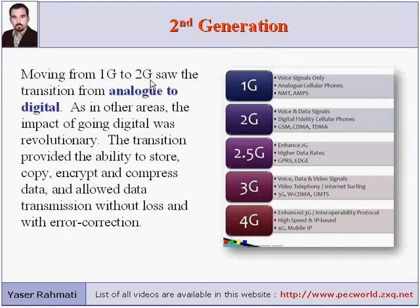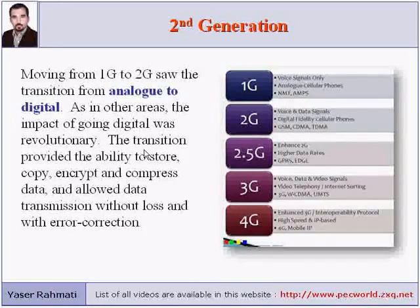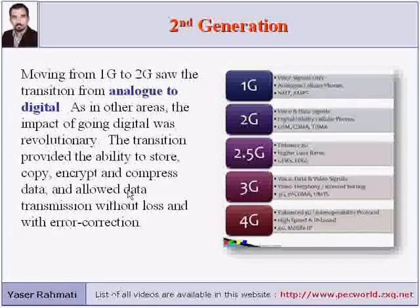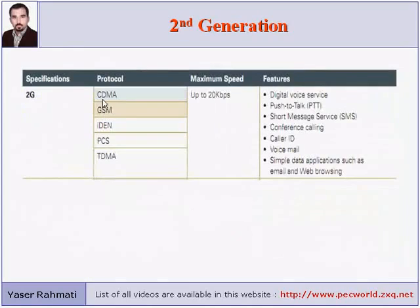2G, or second generation. Moving from 1G to 2G saw the transition from analog to digital. The impact of going digital was revolutionary. The transition provided the ability to store, copy, encrypt, and compress data, allowing data transmission without loss and with error correction. CDMA, GSM, IDEN, PCS, and TDMA are the major protocols, and the maximum speed is up to 20 kbps.